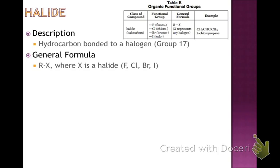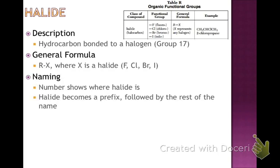Fluorine, chlorine, bromine, or iodine. When we name this, we name it just like we would any hydrocarbon. If you're still shaky on hydrocarbons, make sure you visit the video on the homologous series — the alkanes, alkenes, alkynes, and naming hydrocarbons. With naming halides, the number shows what position the halide is on, just like it would for an alkyl group, and the halide becomes a prefix. Table R tells you the prefixes: F is fluoro, chlorine is chloro, bromine is bromo, and iodine is iodo.